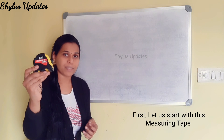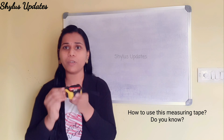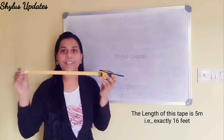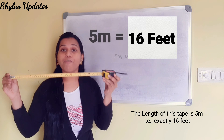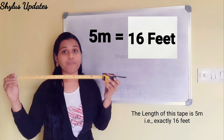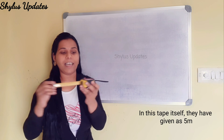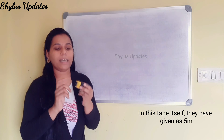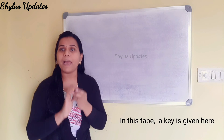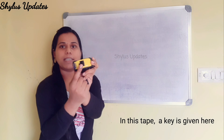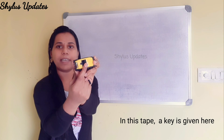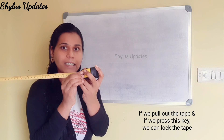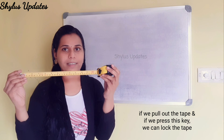First, let us start with this measuring tape. How to use this measuring tape — do you know? The length of this tape is 5 meters, which means 15 feet. In this tape itself, they have given 5 meters. In this tape, a key is given here. You can see this is the key. If we pull out the tape and press this key, we can lock it.